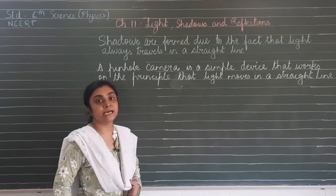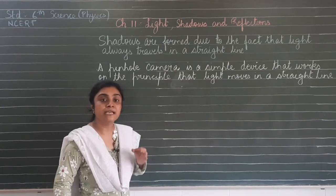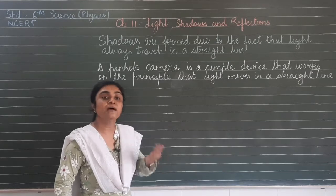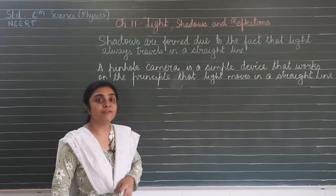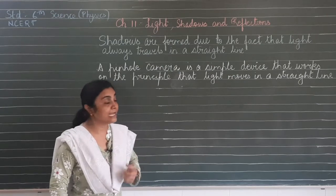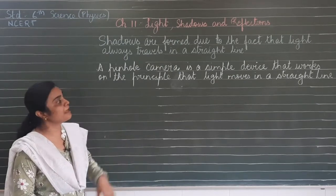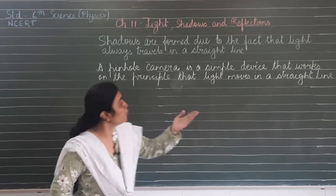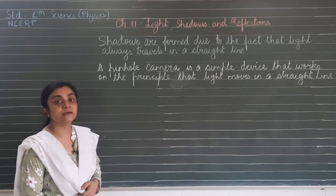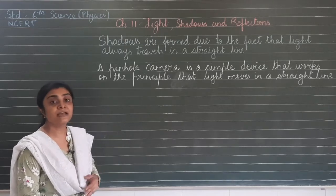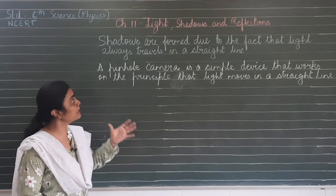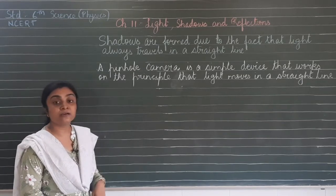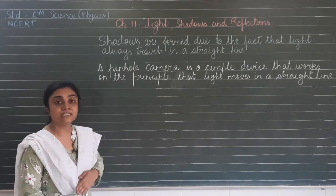Shadows are formed due to the fact that light always travels in a straight line. A pinhole camera is a simple device that works on the principle that light moves in a straight line.